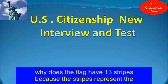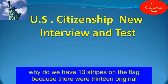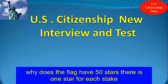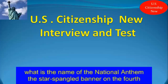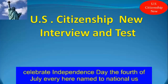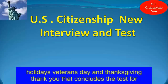Now we go to the symbols section. Why does the flag have 13 stripes? Because the stripes represent the original 13 states and 13 original colonies. Why does the flag have 50 stars? There is one star for each state. What is the name of the national anthem? The Star-Spangled Banner. On the 4th of July, we celebrate independence from Great Britain. When do we celebrate Independence Day? The 4th of July every year. Name two national U.S. holidays. Veterans Day and Thanksgiving.